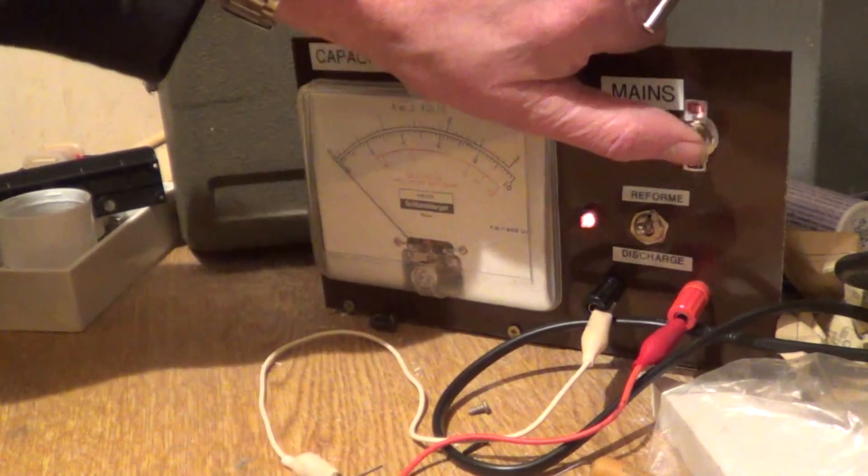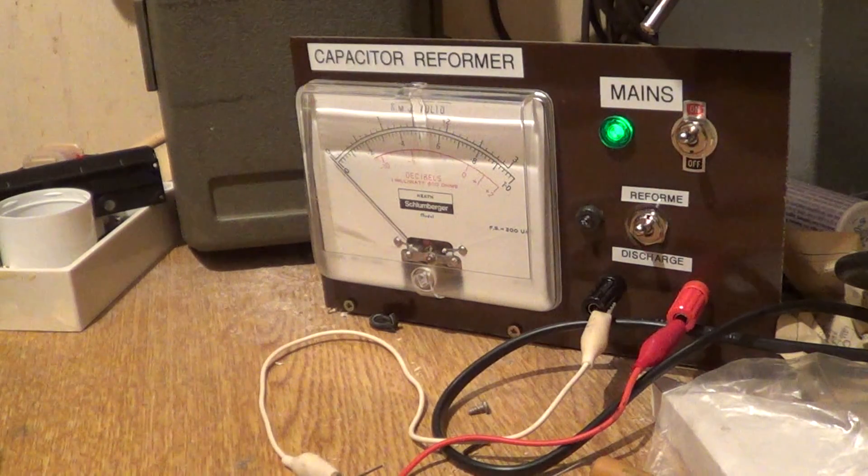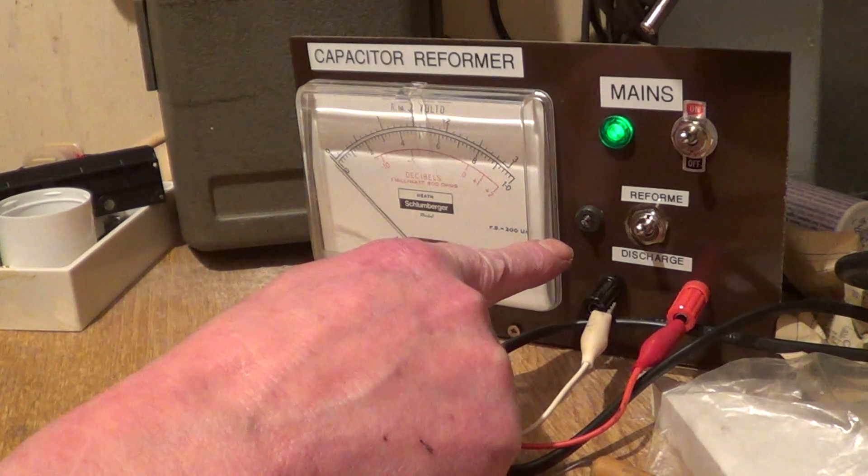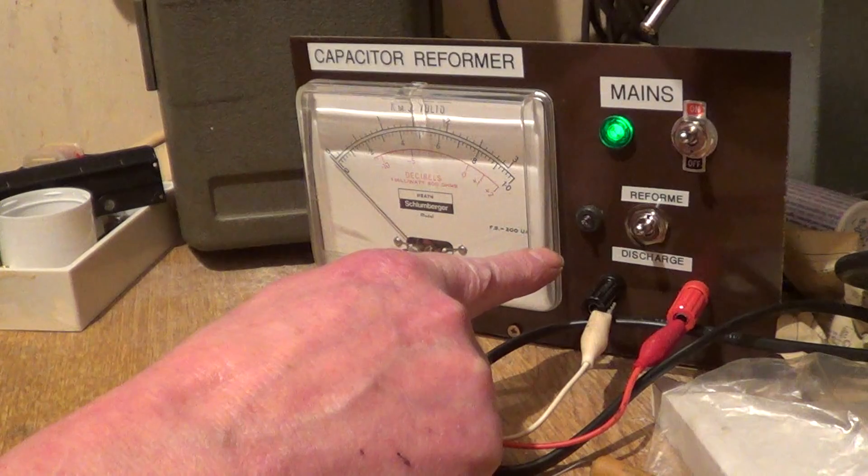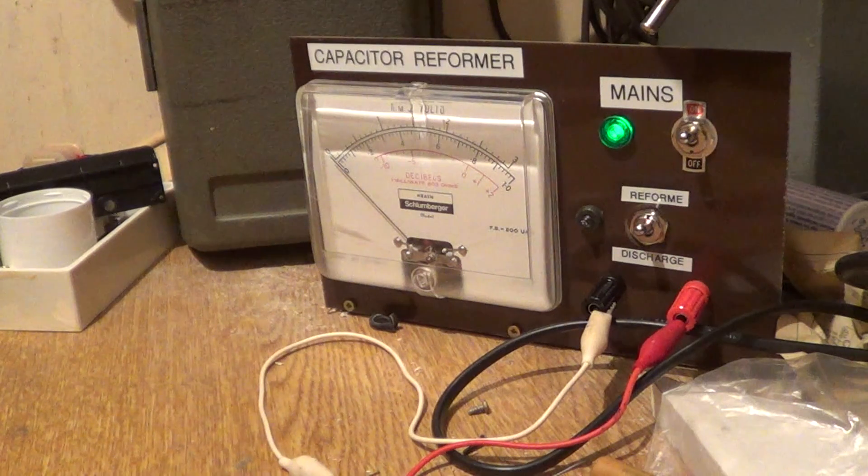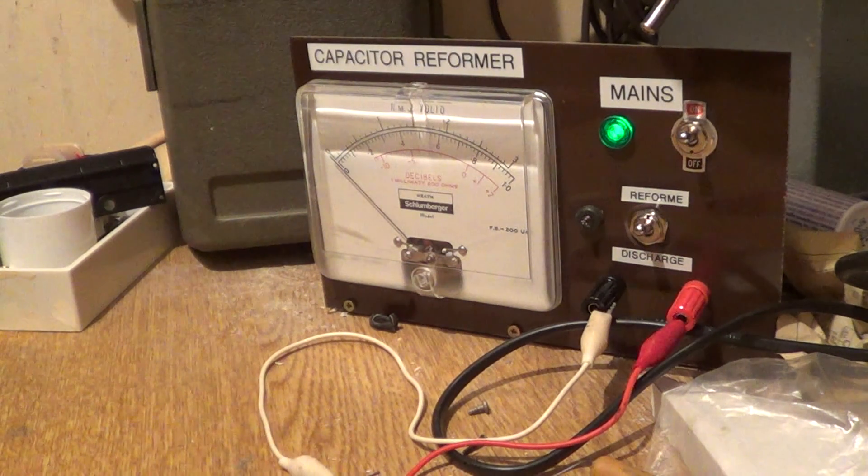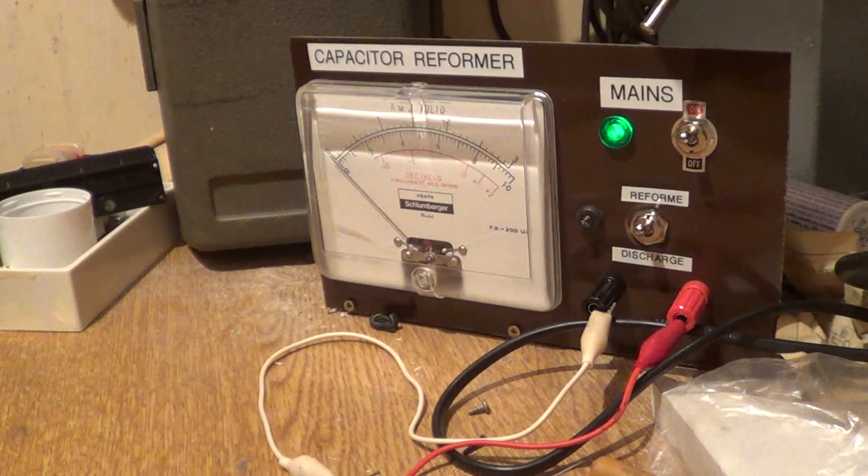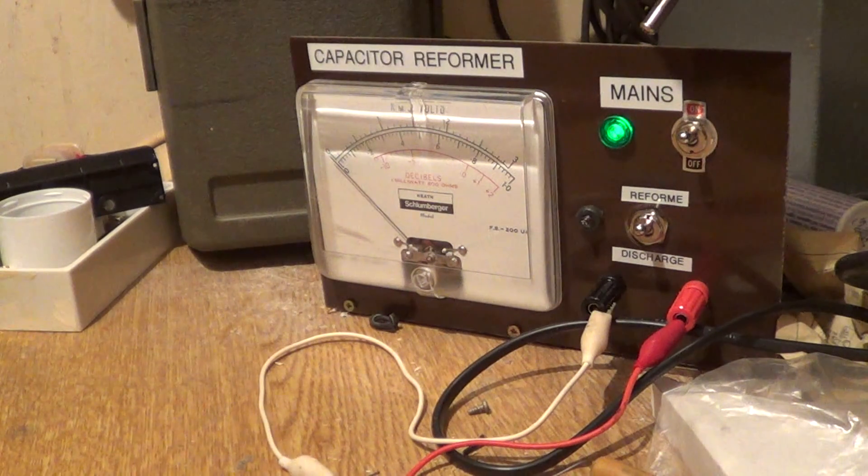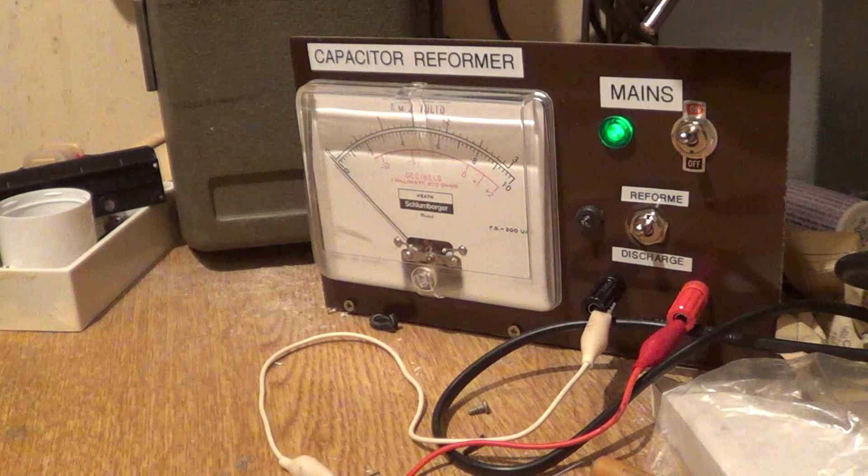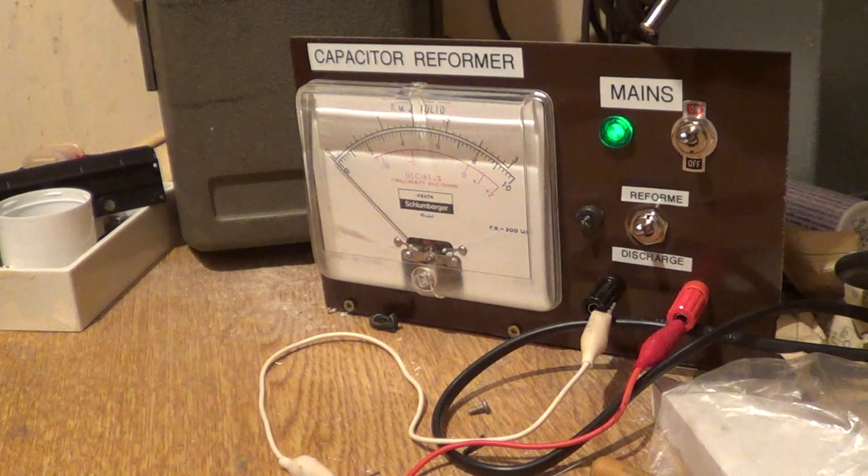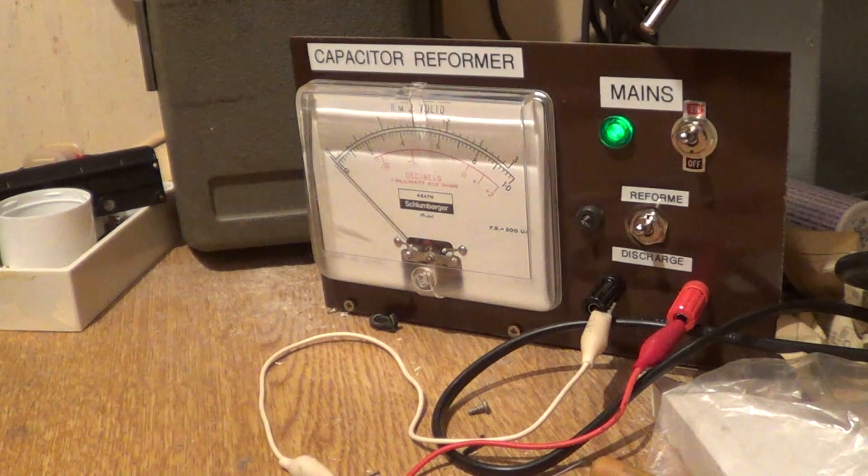Put it on to reform and we see the difference. The neon flashes very occasionally. It will flash again because what's happening, the neon strikes at 70 volts and the capacitor charges up. Once it charges past 70 volts, no current flows through the neon.